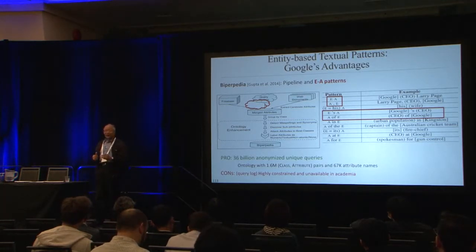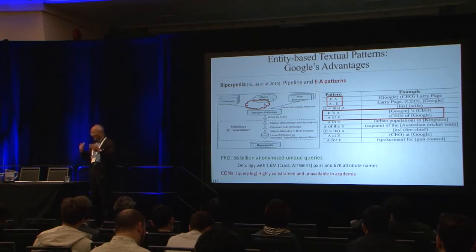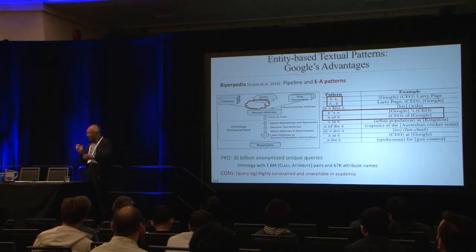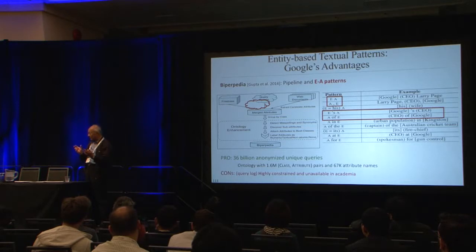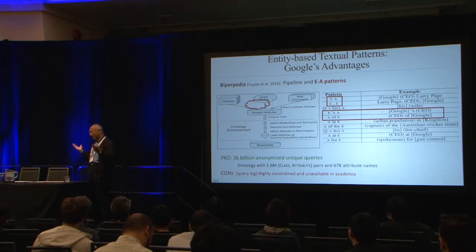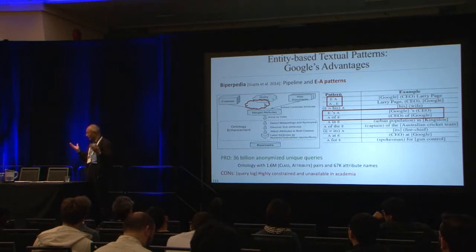I actually visited Google last March. They told me that for an entity like 'country,' they extracted over 100,000 distinct attributes — like president, population, and many others — with accuracy over 90%. That's very amazing.